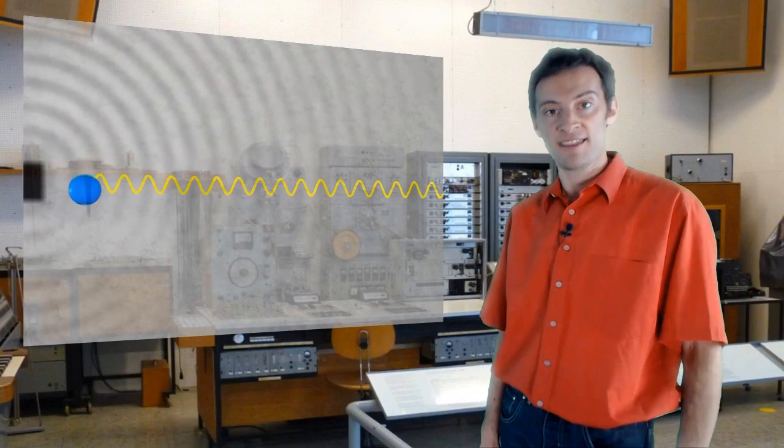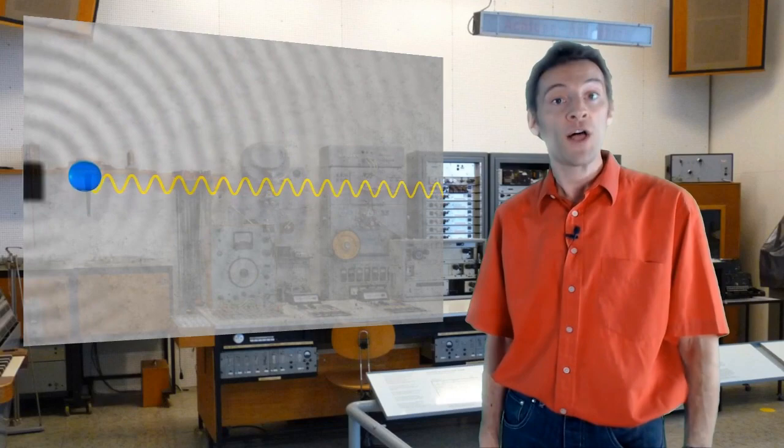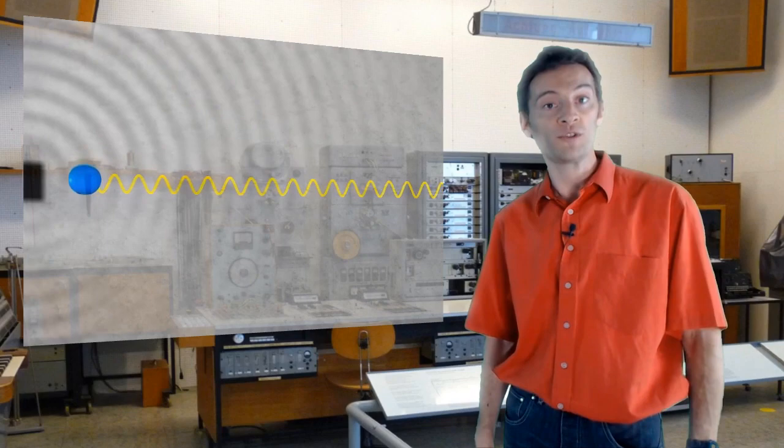How could we represent this line mathematically? Well it just so happens there is a mathematical function that looks very much like this simple wave shape. That function is called a sine function.